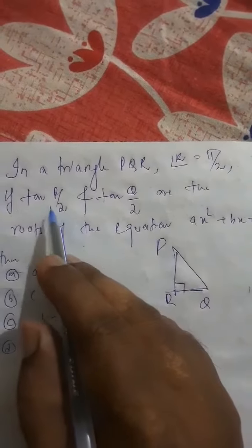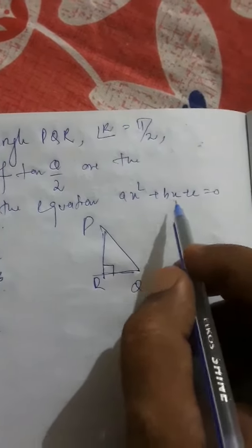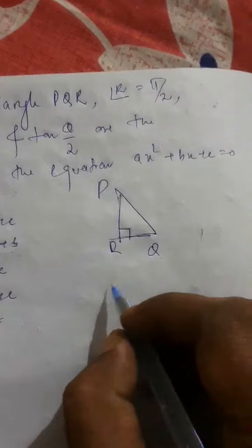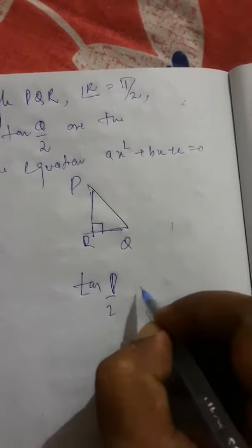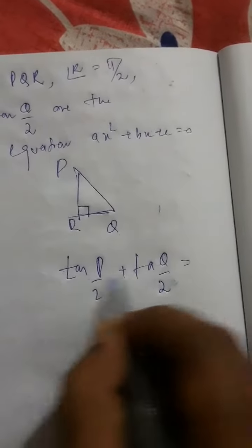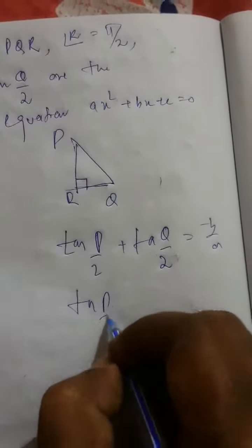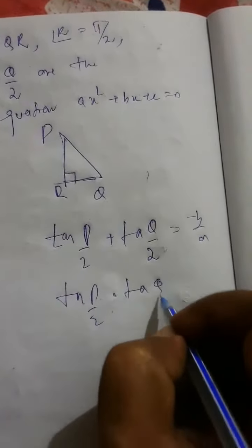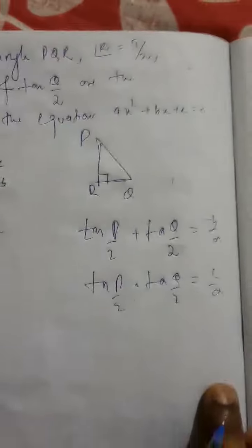The question says tan P by 2 and tan Q by 2 are the roots of the equation Ax square plus Bx plus C. This means tan P by 2 is one root and tan Q by 2 is one root. This means sum of the roots will be minus B by A and product of the roots tan P by 2 into tan Q by 2 is equal to C by A.